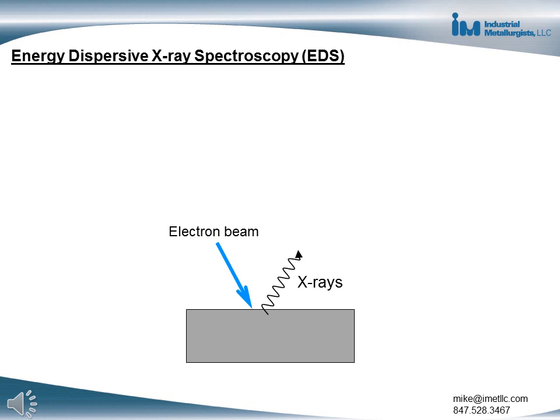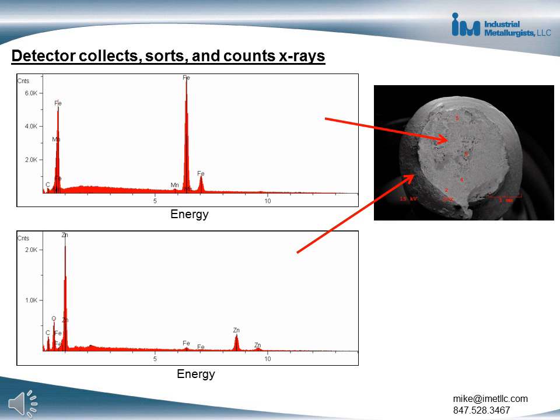X-rays from the sample are created when electrons in the beam strike the sample. The energies of the X-rays emitted from any particular element are characteristic of that element, so the X-rays can be collected by a detector and used to identify the elements present and their relative amounts. The top spectra shows X-rays collected from the fracture surface — the only elements of interest detected were iron and manganese, which are present in steel. The bottom spectra shows X-rays from the thread area, where the main element of interest was zinc.